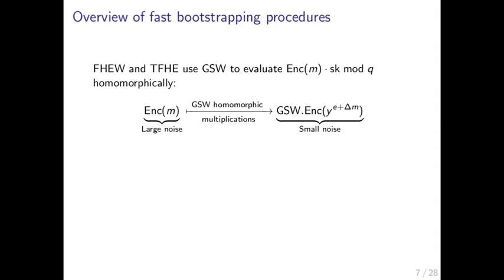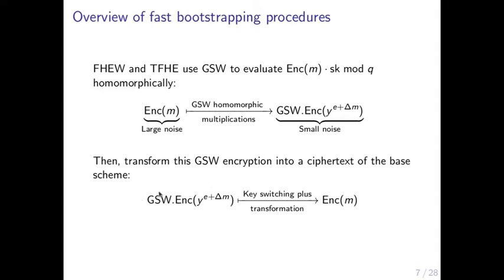FHEW and TFHE use the homomorphic multiplication of GSW to compute this inner product mod q in the exponent of y. They start with the encryption of m in the base scheme with large noise, and obtain a GSW encryption of y to the power of (noise + message), which itself has small noise. Then, in the final step, they transform a GSW encryption of a power of y depending on m into a base scheme encryption of m, and the noise of this final ciphertext is only slightly bigger than the GSW encryption's noise.